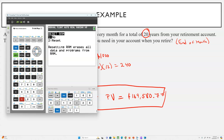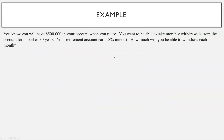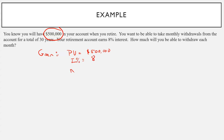Let's do another one. You know you will have $500,000 in your account when you retire — you saved half a million dollars. You want to take monthly withdrawals from the account for a total of 30 years, and your retirement account earns 8% interest. So how much will you be able to withdraw each month? This problem is different — it's telling you how much is in your retirement account, so you're given the starting amount, which is the present value. You're going to take 360 withdrawals.